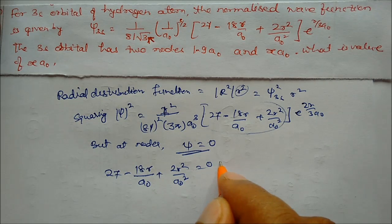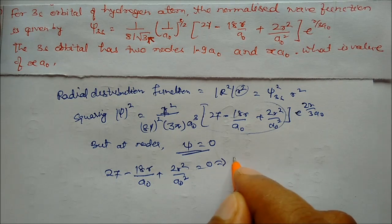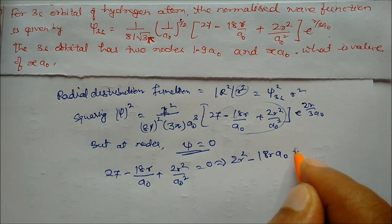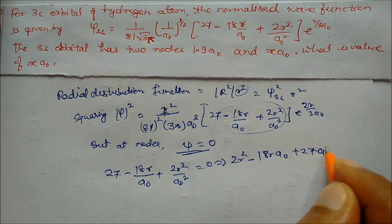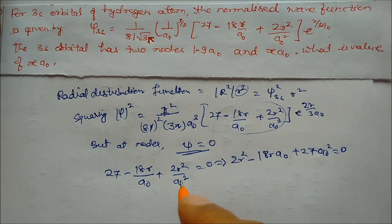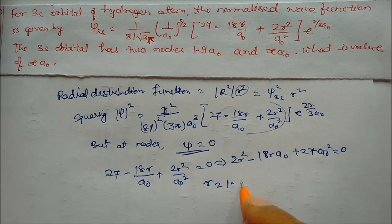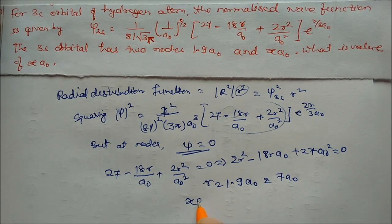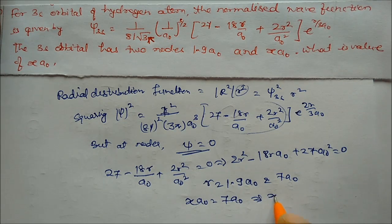This simplifies to 2r² - 18r·a₀ + 27a₀² = 0. Solving gives r = 1.9a₀ and r = 7a₀. They are asking for x·a₀, and the answer is x·a₀ = 7a₀, so x = 7.